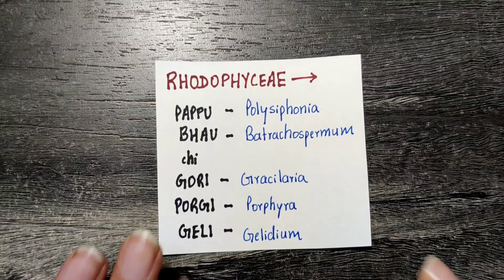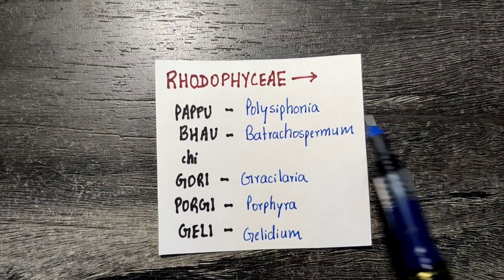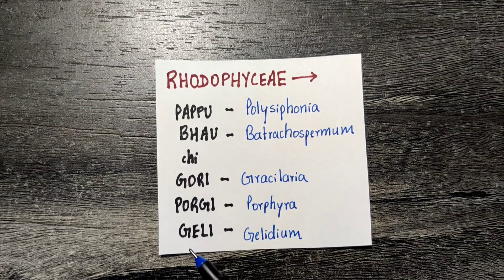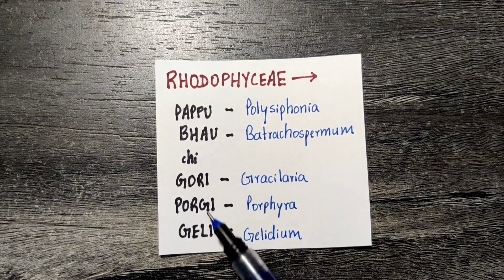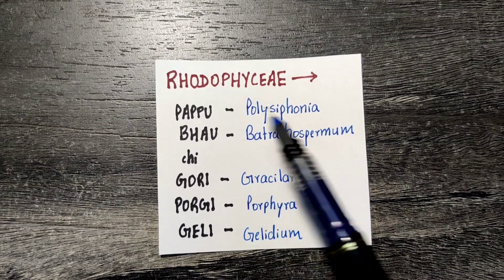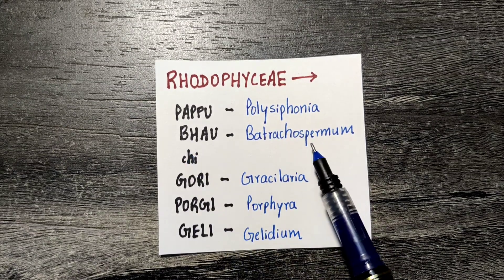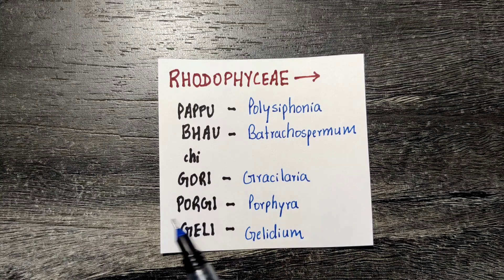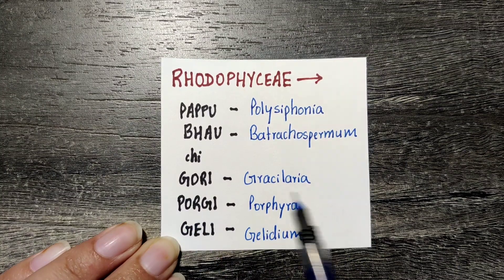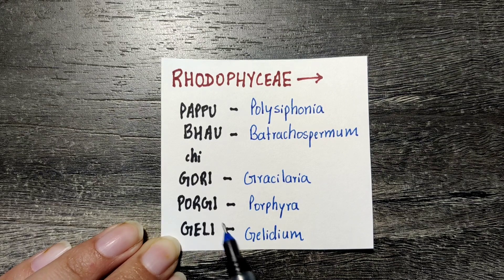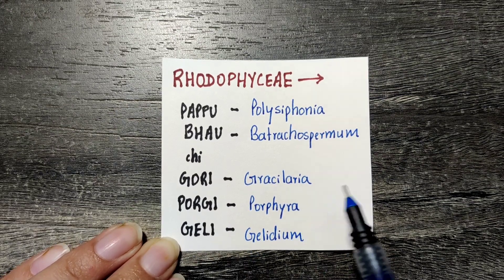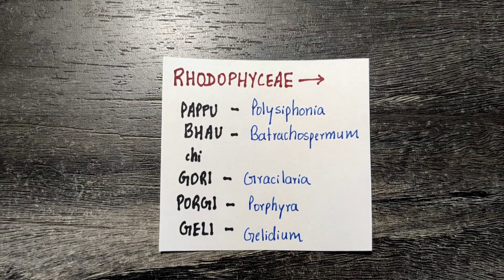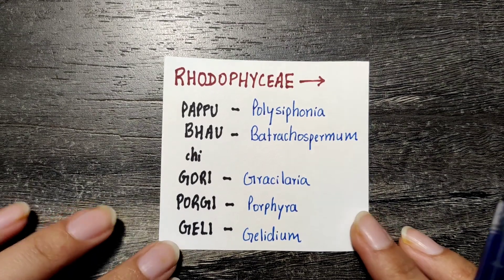The third division is red algae, Rhodophyceae. The trick is 'pappu bhauchi gori purgi gheeli': Pappu is Polysiphonia, B is Batrachospermum, G and R give Gracilaria, P-O-R gives Porphyra, and Gheeli gives Gelidium — it is pronounced Gelidium even though it may look like Gelidium.